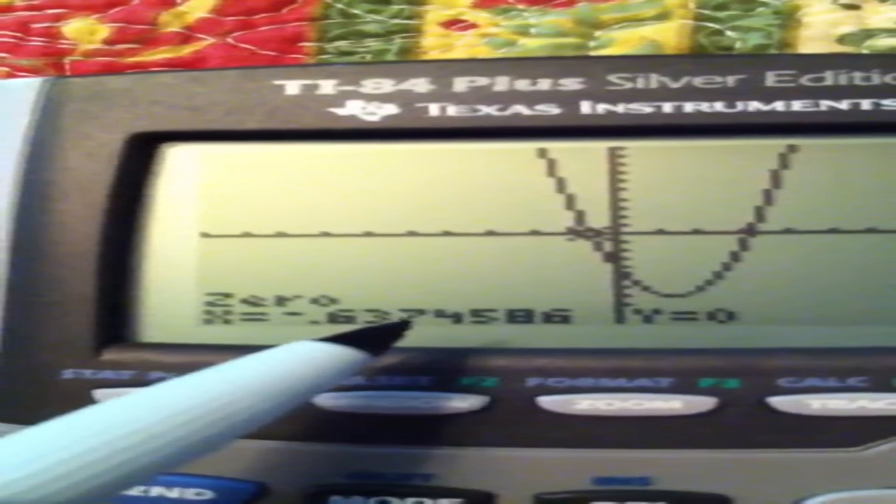Now if this number had been a five or higher, we would have rounded that up to an eight, but it's not. So one answer is x is approximately, not equals because it's not exact, we're rounding it. x is approximately negative point six three seven. That's one of my answers.